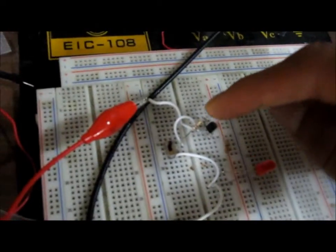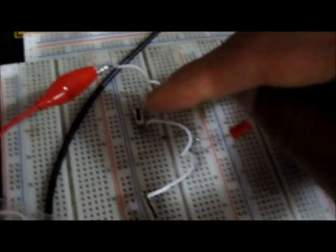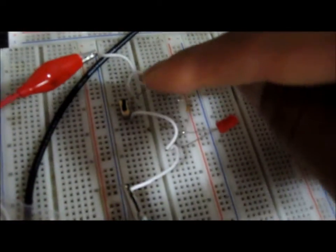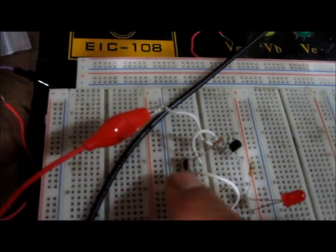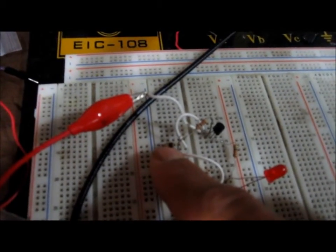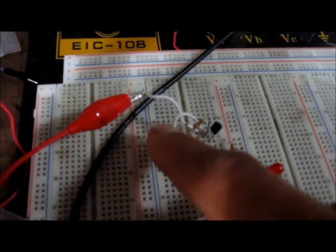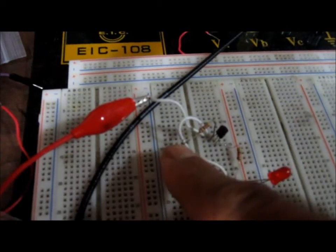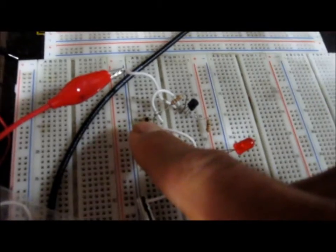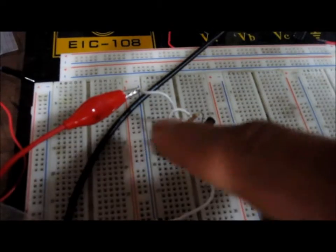I connect the base terminal to ground through a resistor, but I actually have a switch in this circuit. When it's flipped one way, the base is connected to positive voltage, and when it's flipped the other way, the base is connected to ground, so you can see the difference.